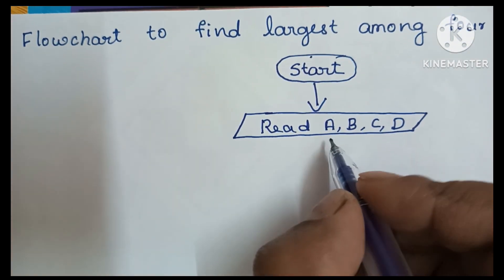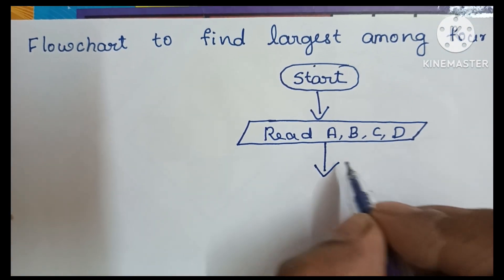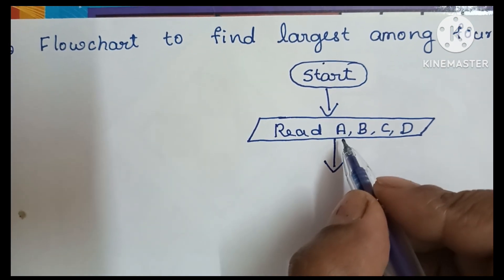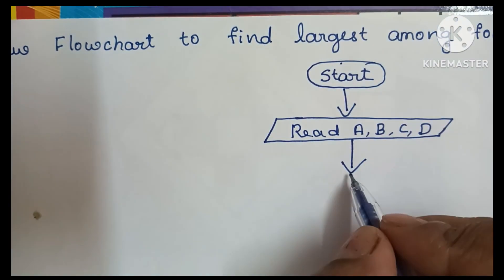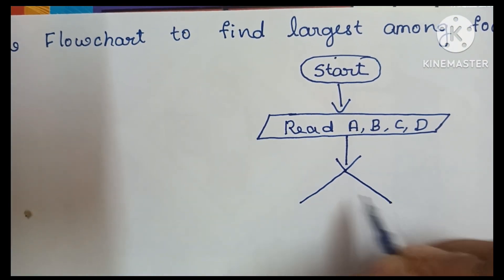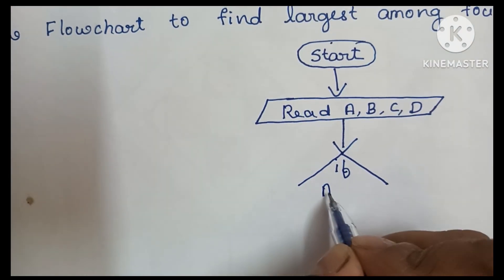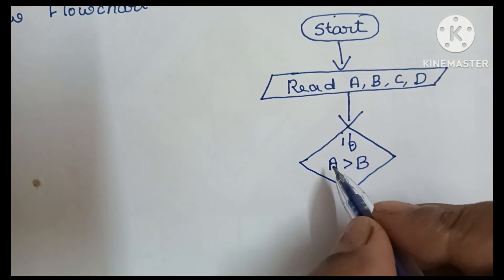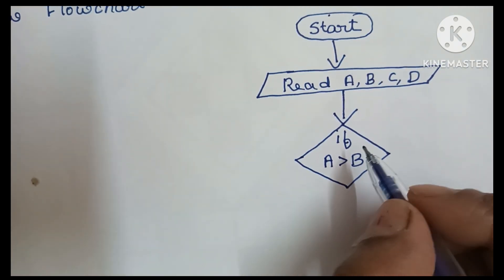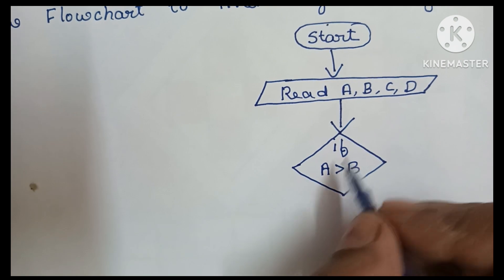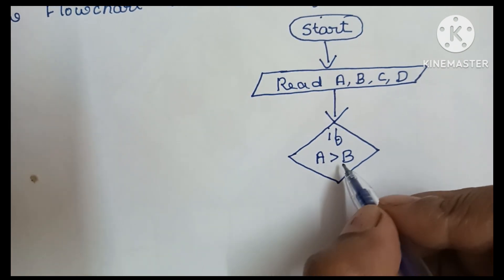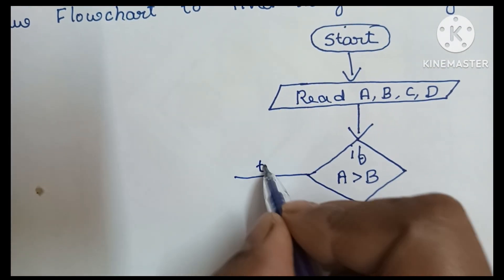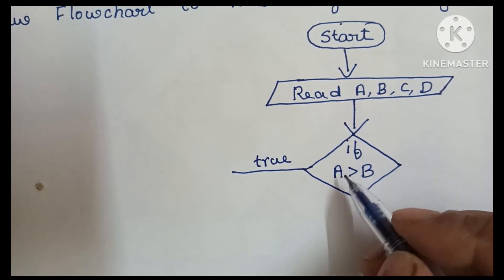Next, we have to compare A with B. The comparison is always done within a diamond shape. So we draw a diamond and write the condition: if A is greater than B.